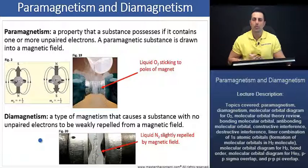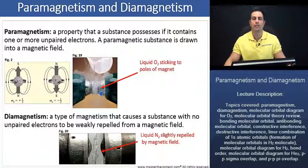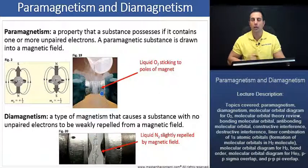Most molecules are going to be diamagnetic. However, oxygen is not diamagnetic — oxygen is paramagnetic, as it is attracted to the poles of the magnet. A molecule is said to be paramagnetic when it contains one or more unpaired electrons within its structure. Furthermore, the more unpaired electrons a substance has, the stronger that paramagnetic attraction is going to be.